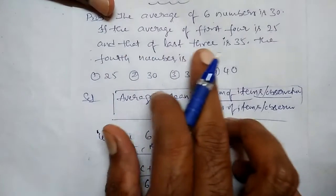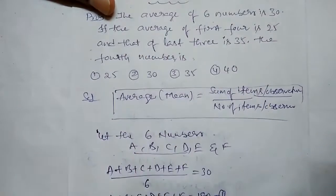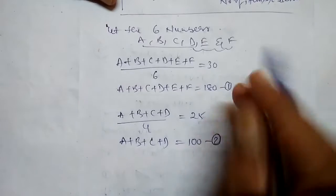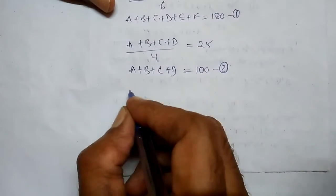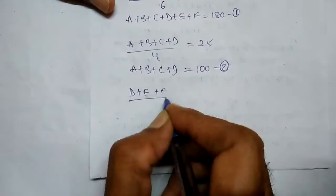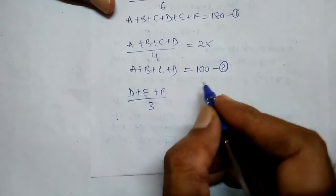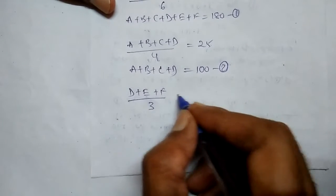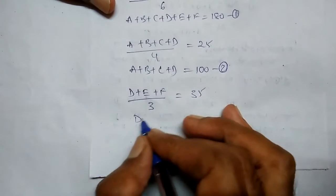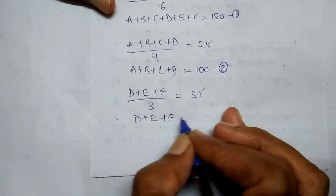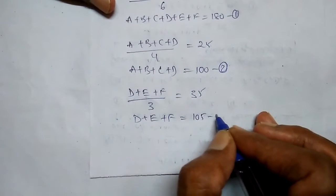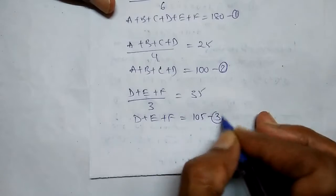The average of the last three numbers is 35. So D plus E plus F divided by 3 is equal to 35. Therefore, D plus E plus F is equal to 105. This is the third equation.